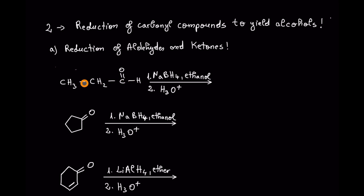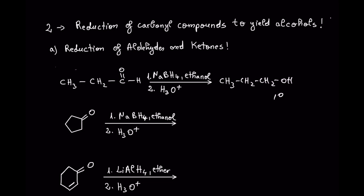If we treat an aldehyde — for example propanal — with sodium borohydride in ethanol solvent, followed by acidification of the solution, we are going to yield primary alcohols. In this case it is going to be propanol. If we start from a ketone with sodium borohydride, we are going to yield a secondary alcohol.